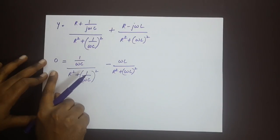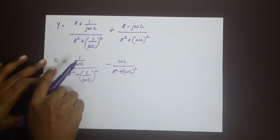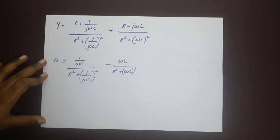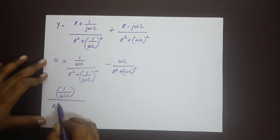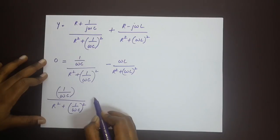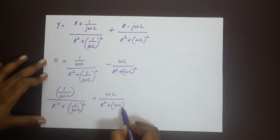What we can do is bring one term to the other side and then cross multiply and make sure you have one entire equation. We will get 1 by ωc divided by R square plus 1 by ωc whole square is equal to ωL by R square plus ωL whole square.